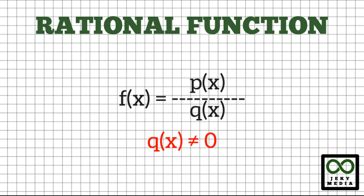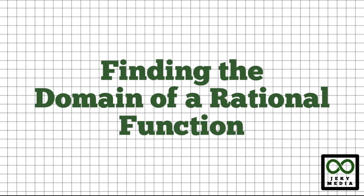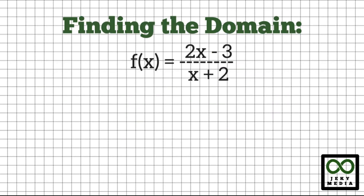We know that a rational function is simply a fraction where the denominator cannot be equal to zero. First, let's take up how to find the domain of a rational function. For example, we have the rational function f(x) equals (2x minus 3) over (x plus 2).